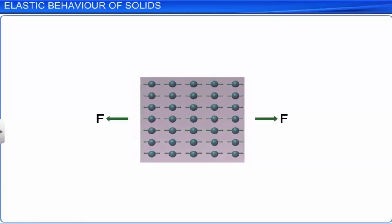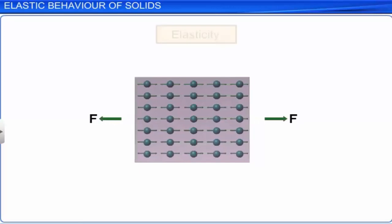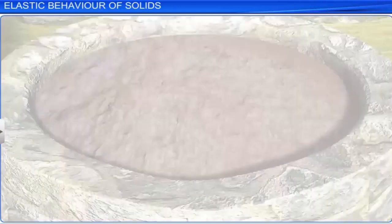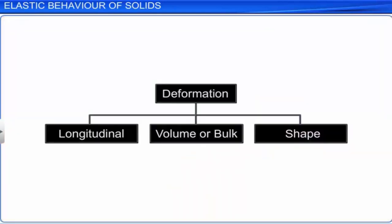The material is called an elastic material. There are some materials that offer little or no tendency to regain their original shape and size, even when deforming forces are removed. Such materials are called plastic, and this property is called plasticity. Putty and mud are almost perfectly plastic. A body can be deformed in one or more of three possible ways: namely, longitudinal deformation, volume or bulk deformation, and deformation in shape.